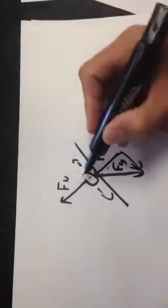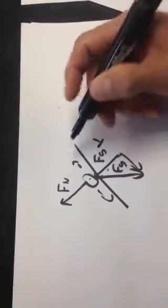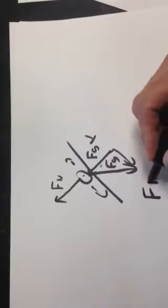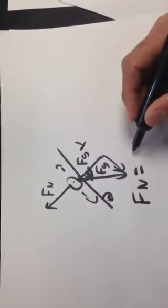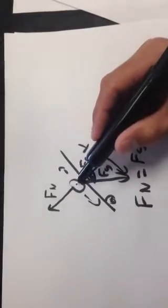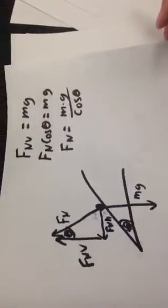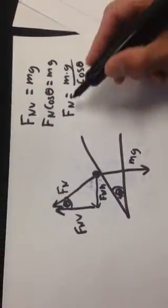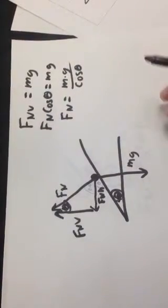In a problem where a body is staying still on a ramp or sliding up and down, the normal force equals Fg times cosine theta. But if we're going around a banked corner it's different: the normal force is equal to the force of gravity divided by cosine theta.